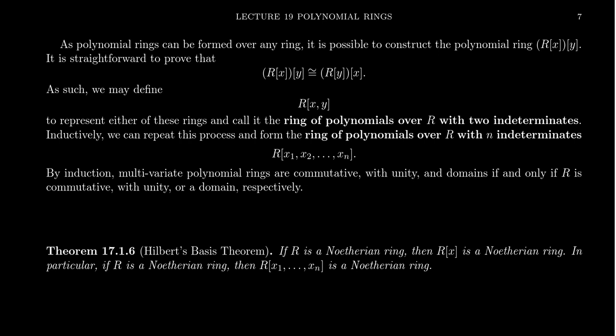As polynomial rings can be formed over any ring, it's possible to construct a polynomial ring when the coefficient ring itself is a polynomial ring. So if R is a ring, then R adjoined X is a polynomial ring. But that means it's a ring, and therefore we could adjoin a new indeterminate, because all that we require is that Y be some symbol, some number, that is not inside of the set RX whatsoever.